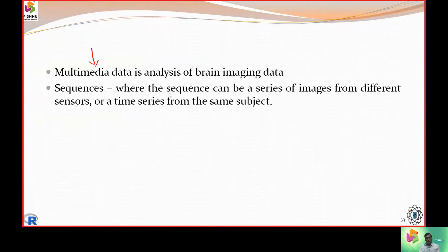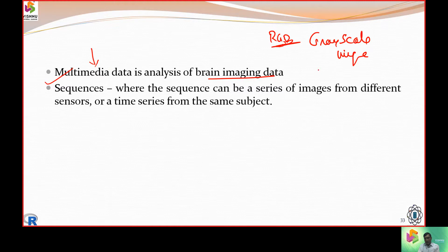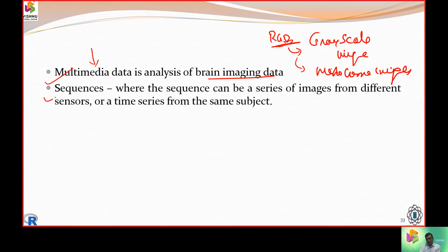Another type of social media data that Yelp brings is multimedia data. This includes brain image data, which deals with red-green-blue images, grayscale images, and monochrome images. There should be a conversion mechanism from RGB to grayscale and then to monochrome for comparative study. Additionally, sequencing is performed to identify how far certain sequences are different from or relevant to the subject.